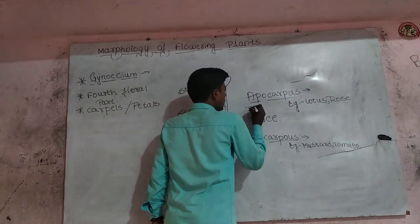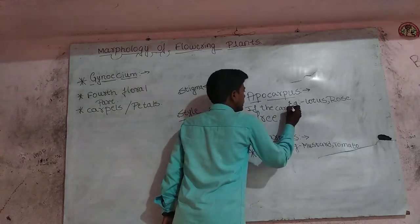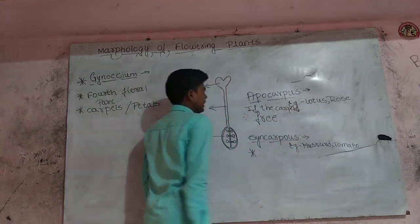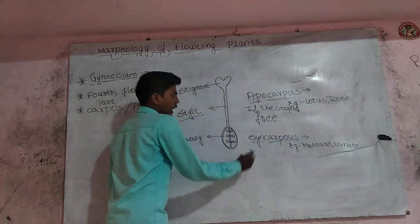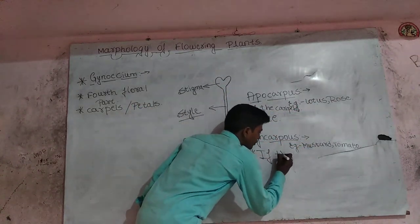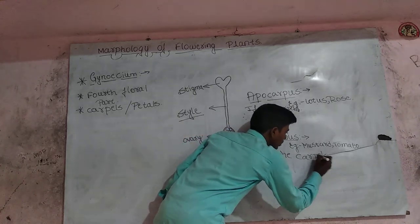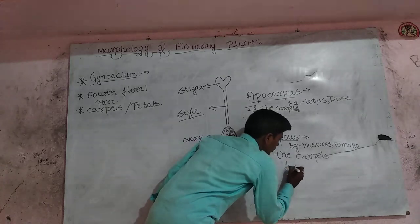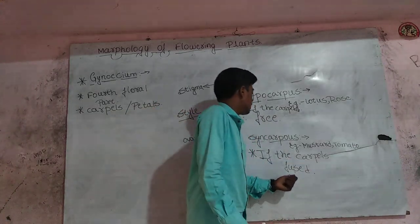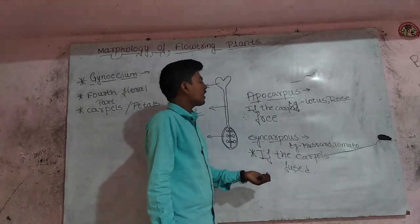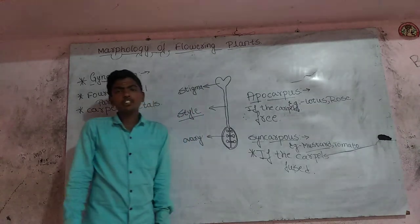Apocarpous means if the Carpels are free, then we consider it as Apocarpous. For Syncarpous, the Carpels are fused together. For example, Mustard and Tomato. Thank you.